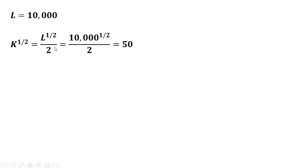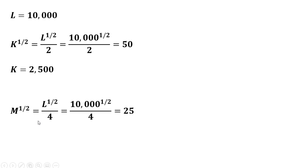With 10,000 units of labor, we find capital using K to the one-half equals L to the one-half divided by two. Plugging in L = 10,000 gives K to the one-half equals 50; squaring both sides, the firm wants 2,500 units of capital. For materials, M to the one-half equals L to the one-half divided by four; substituting in L = 10,000 gives M to the one-half equals 25, and squaring both sides yields 625 units of material.